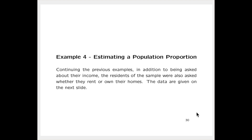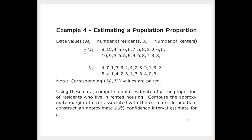Let's look at an example, continuing with the examples we've been examining. In addition to being asked about their income, the residents of the sample were also asked whether they rent or own their homes. The data are given on the next slide. Cap M sub i's are the number of residents in the i-th cluster, and cap X sub i is the number of renters. These values are paired—we have to keep that in mind. Using these data, compute a point estimate of p, the proportion of residents who live in rented housing.